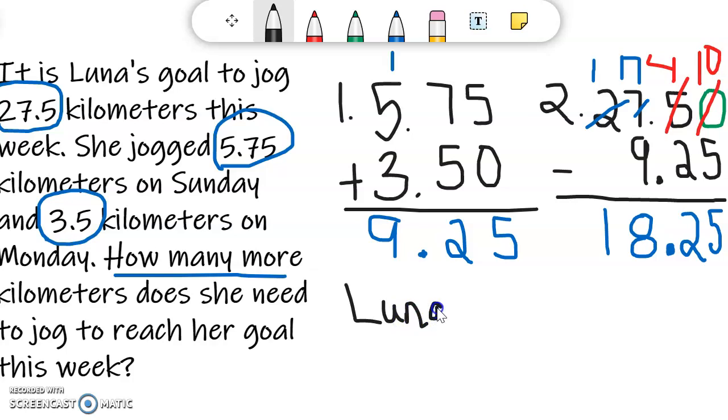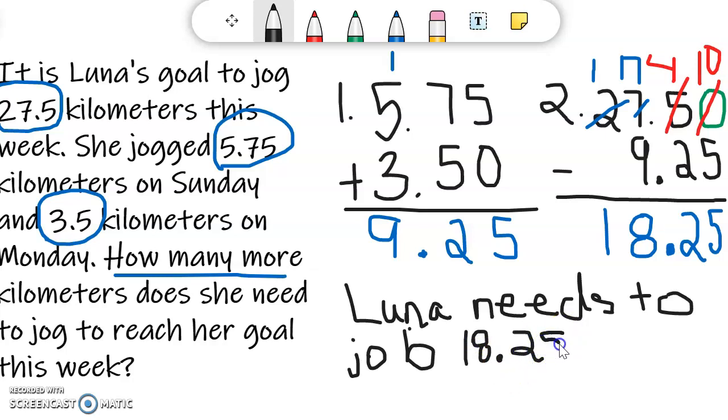Luna needs to... because I want to make sure I'm answering my question by restating my answer. So Luna needs to jog 18 and 25 hundredths kilometers to reach her goal.